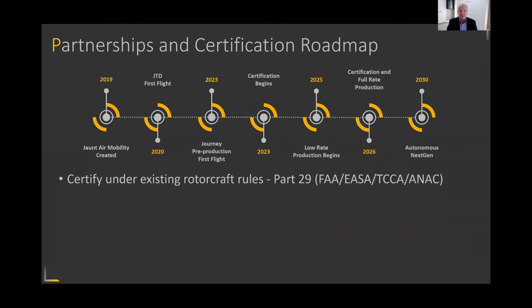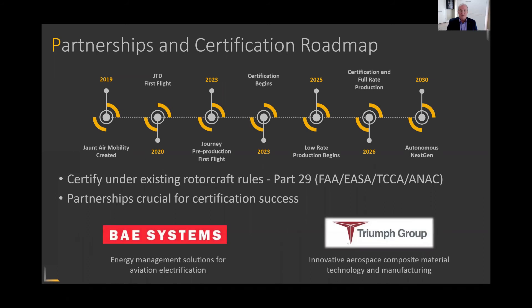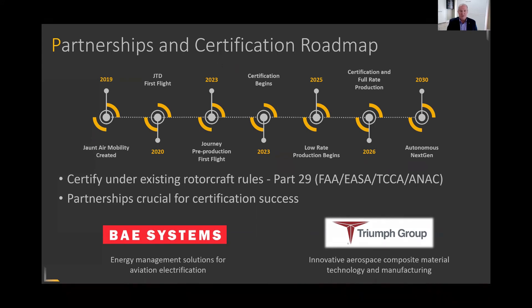Our tier-one aerospace suppliers that are supplying major systems on this aircraft know how to certify under these existing rules, and we believe we have a clear path to certification as a result. BAE Systems is developing a large part of the aircraft systems — from the battery systems and high voltage power distribution to flight control computers — and they are integrating those systems on the aircraft. They'll be working very closely with Triumph Aerospace Structures, who will be doing the airframe design and integration of these systems into the aircraft itself.